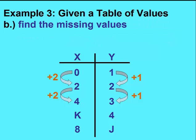For the missing values for x, we're going up by twos. If we increase four by two, we know that k must be six.